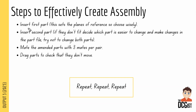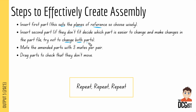Steps to effectively create your assemblies: insert your first part — it sets the planes of reference and affects your isometric view, so choose it wisely. Insert your second part, and if they don't fit, decide which part is easier to change and make changes in the part file — try not to change both parts. Mate parts with three mates, then drag each part to check it doesn't move. If it does, add another mate. Repeat for all parts. The key takeaway: only change the simpler part, not both.